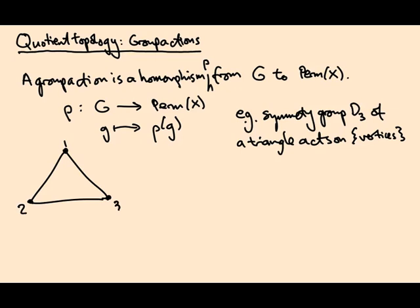If I do some symmetry, like say a reflection, that permutes 2 and 3. So rho of the reflection is the permutation (2,3).